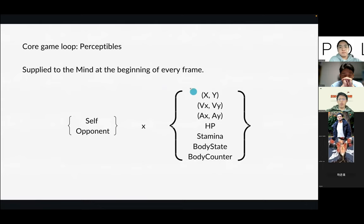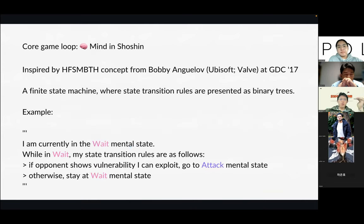Perceptibles include your own information — your position, your health points, stamina, what your body is doing — and also your opponent's information. Basically everything that can be observed about the world is included in the perceptibles. These perceptibles are processed by the mind. The question is: how is the mind structured? Our biological minds are structured by neurons and signals. GPT-4's mind is structured by huge neural networks.